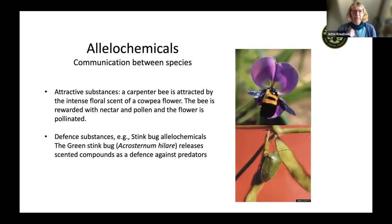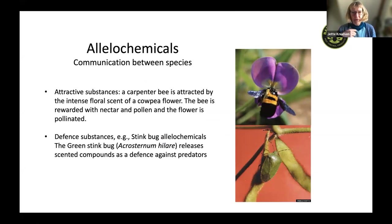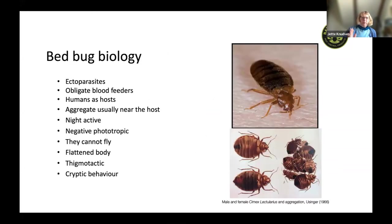Allelochemicals are chemicals used to communicate between species. For example, the floral scent of a beautiful flower attracts a carpenter bee from a distance, and at closer range color takes over. The bee gets nectar and pollen from visiting the flower, so both are satisfied. This is communication between two different species. Defense substances, like those from the stink bug, are also allelochemicals — it emits a horrible-smelling substance when in danger.